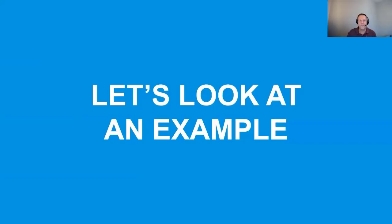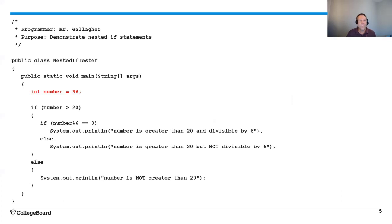Let's look at an example. So here I've got a program that I wrote called NestedIfTester and it starts out, I have an integer called number that I initialize to 36. Then I've got a series of if statements and in the first one, I check to see if number is greater than 20. It is.